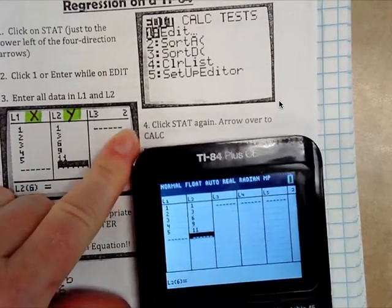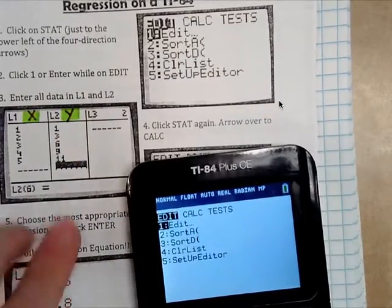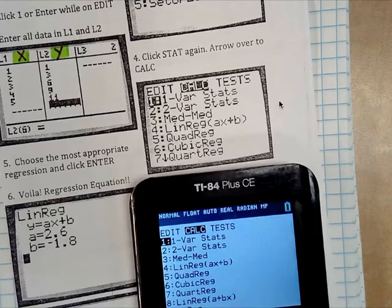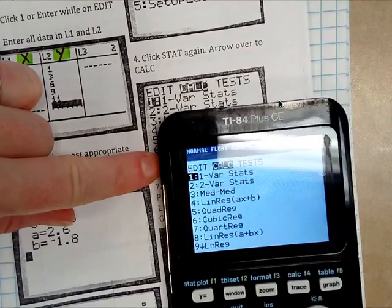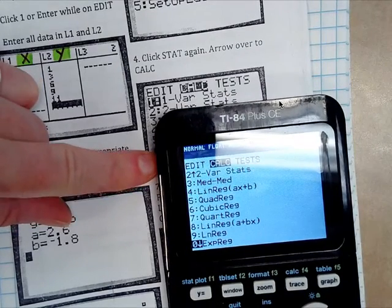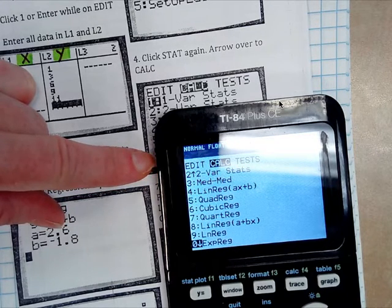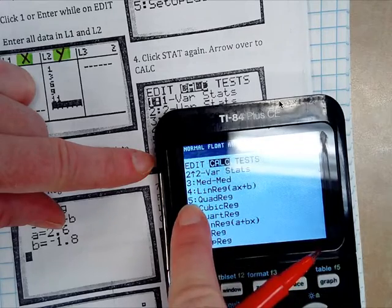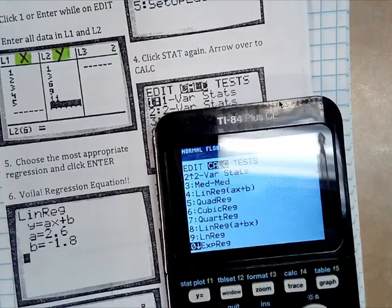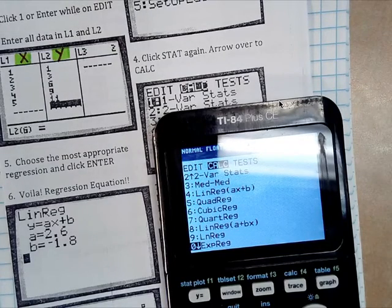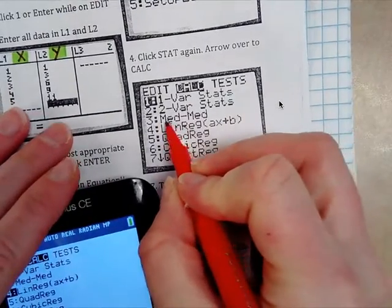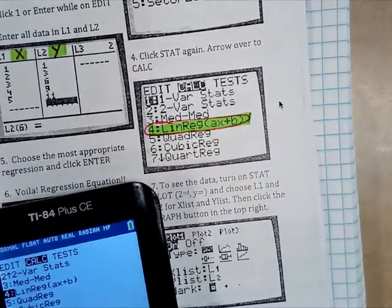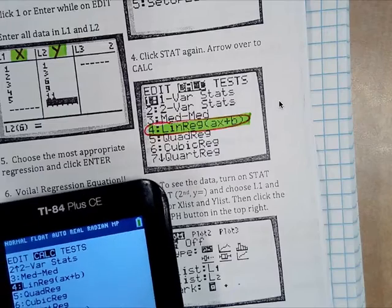Alright, it says click stat again. So go to stat. Arrow over to calc. And we're going to calculate what's called linear regression. So sometimes we'll have quadratic regression, cubic, quartic, exponential regression. So we've only learned linear functions so far, so we're doing linear regression. But we are going to learn about exponential functions and exponential regression, which would be 0, and also quadratic regression, which is number 5. So anytime you're given a list of values, a table of values, you can use this to find out what the equation is. So I'm going to go back up to 4. So I want y'all on your paper, circle 4, linear regression, or highlight it.